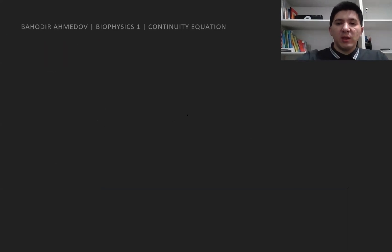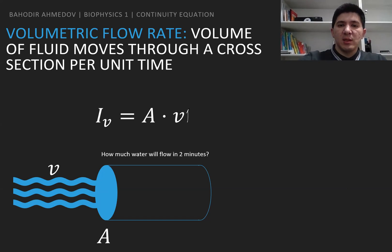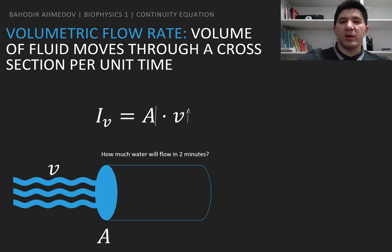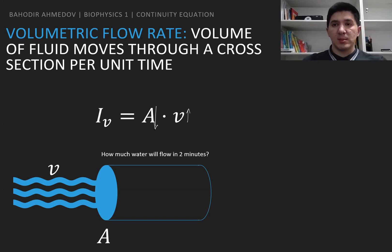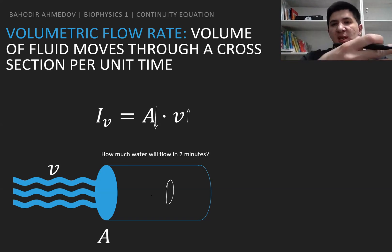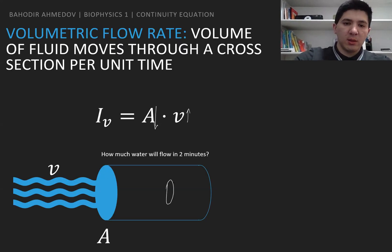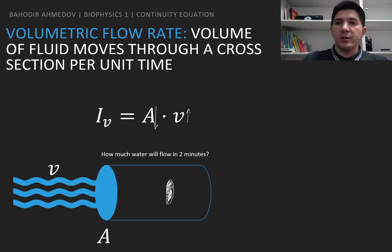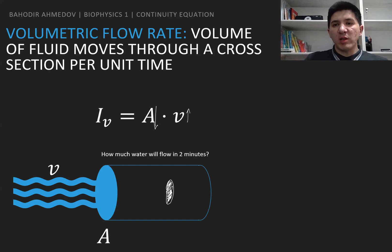This equation tells you: if you increase the velocity, then the cross-section area is going to decrease — which is natural. If a stream of water passes through a smaller cross-section area, then the velocity is going to be higher. So the cross-section area is inversely proportional to the velocity.